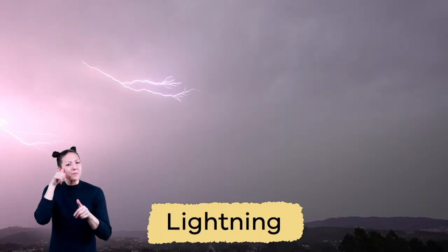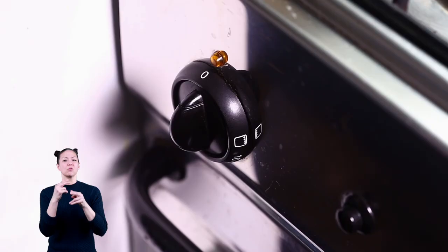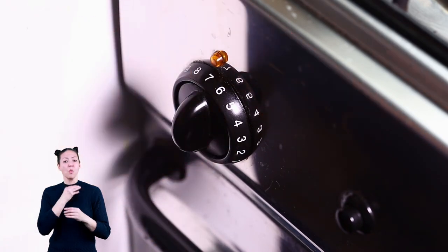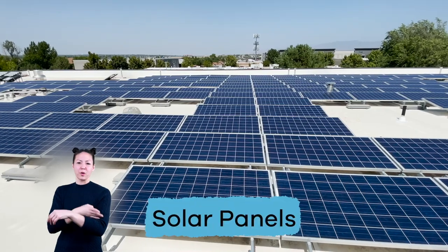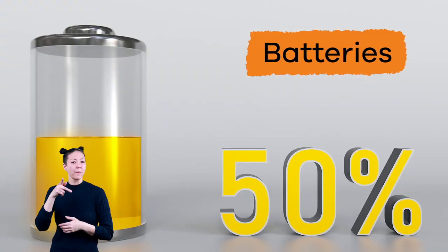Remember, electric current in nature is called lightning, and the electric current in our homes is produced by power plants, solar panels, batteries, and more.